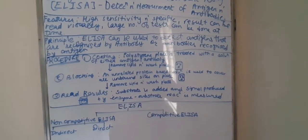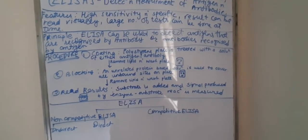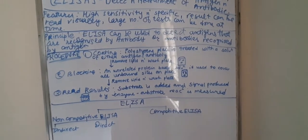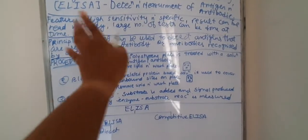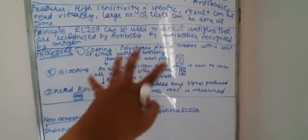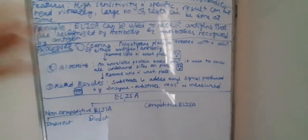ELISA principle: ELISA can be used to detect antigens that are recognized by antibodies, or vice versa - antibodies that are recognized by antigens.